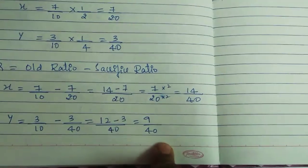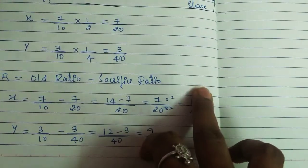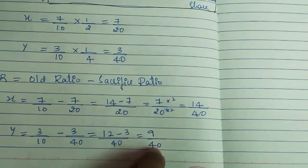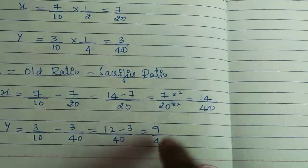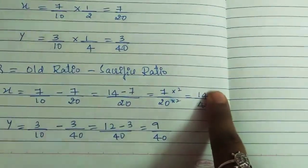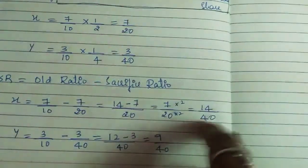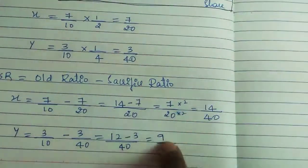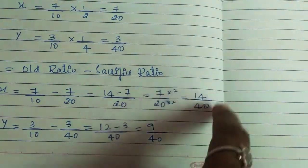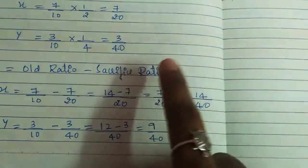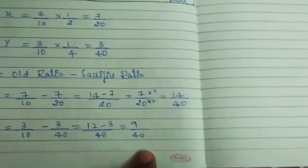Y's new ratio is 9/40. Now we need to equalize the denominators. X's share 7/20 is converted: multiply numerator and denominator by 2 to get 14/40. Y's share stays as 9/40. So X's equalized new ratio is 14/40 and Y's is 9/40.